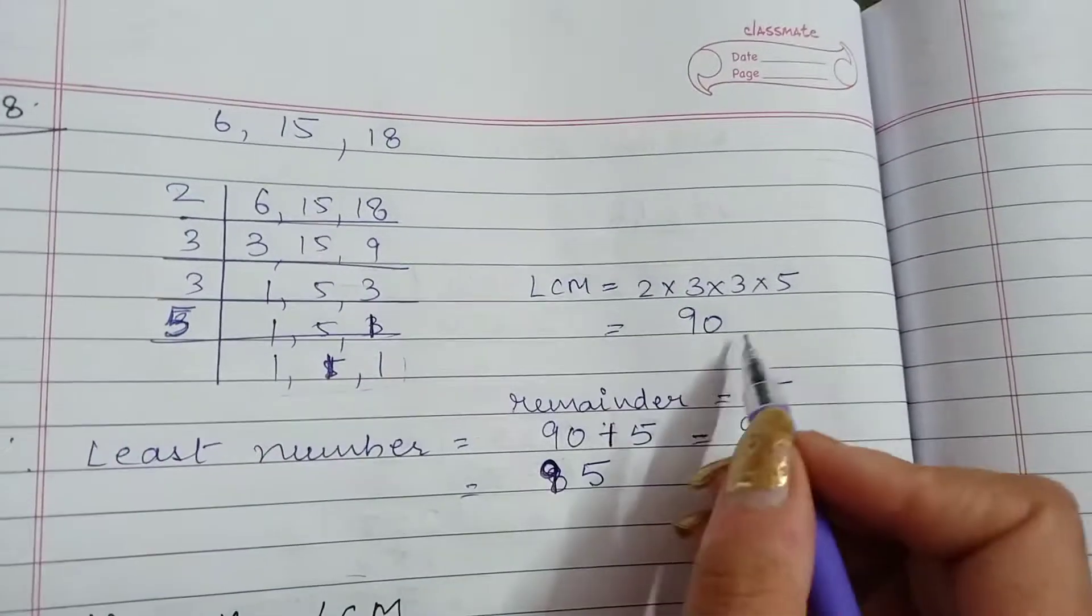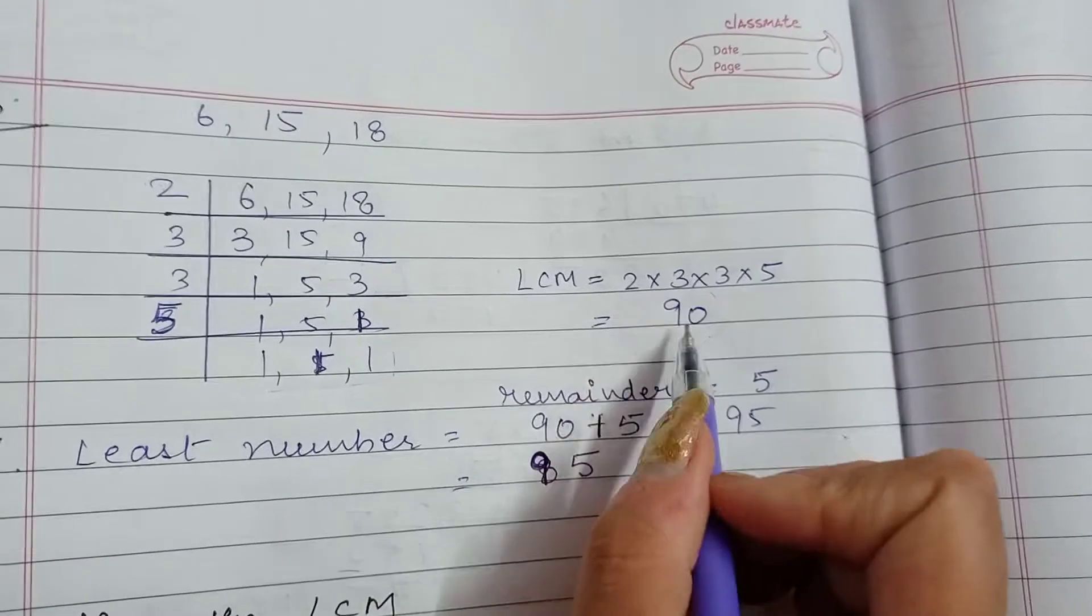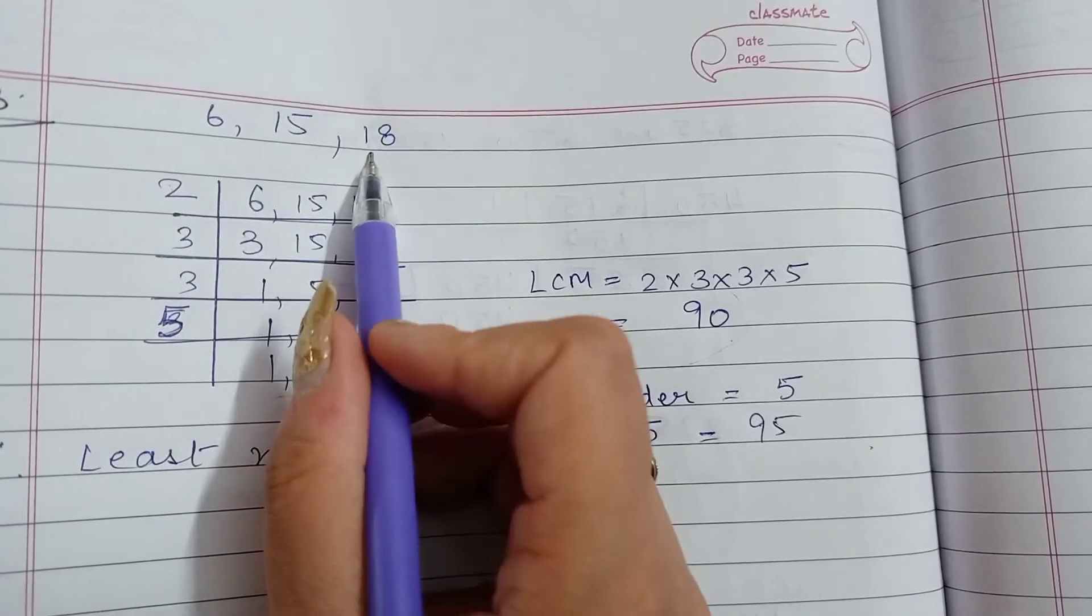2, 3's are 6. 6, 3's are 18. 18, 5's are 90. 90 is the LCM which will easily be divisible by 6, 15 and 18.